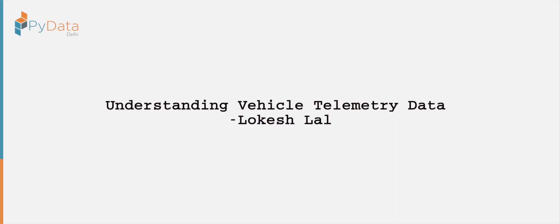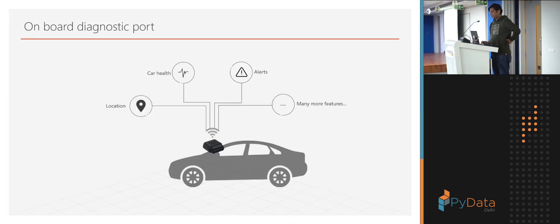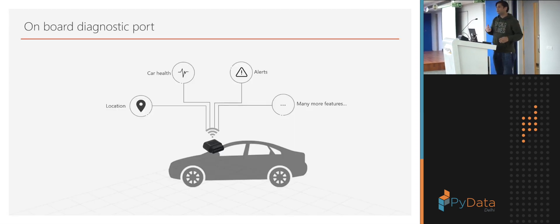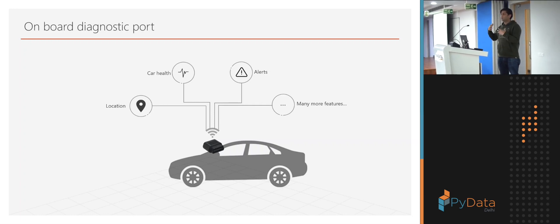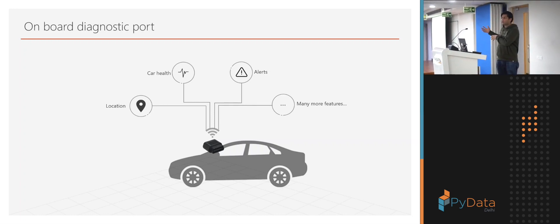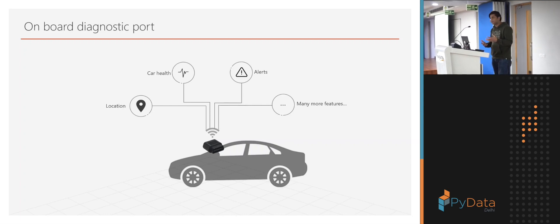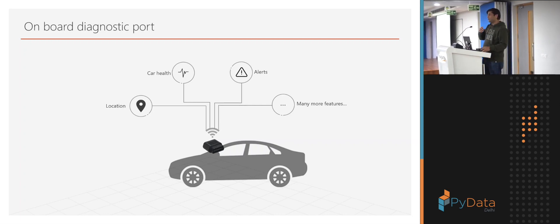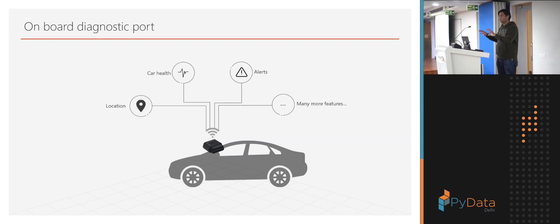Hi, I'm Aisath Lokesh. I work with Nagarov as a programmer and the topic we will discuss today is telemetry data. Telemetry data is the events being sent by a vehicle to a cloud, IoT hub, or APIs. Every car has many computers — on the dashboard, on the engine ECU, which we call ECU.